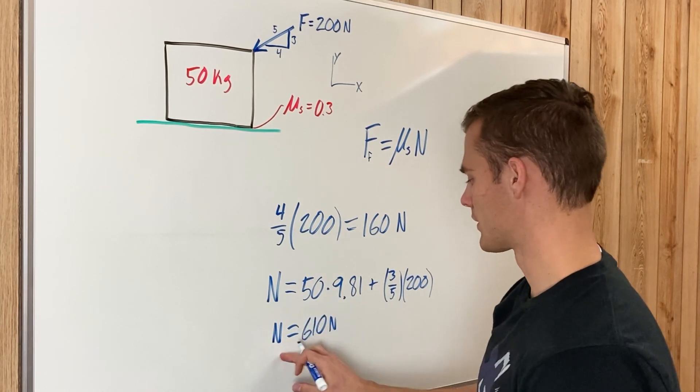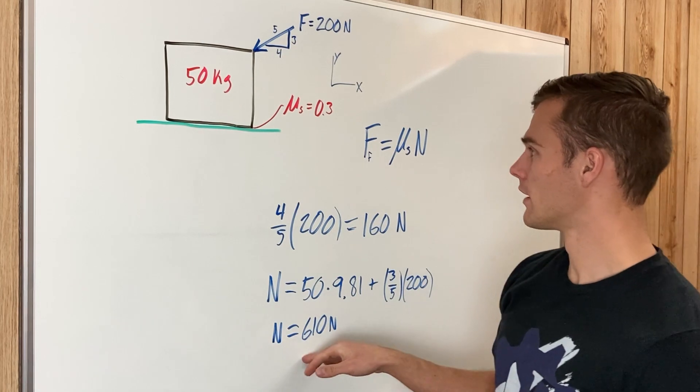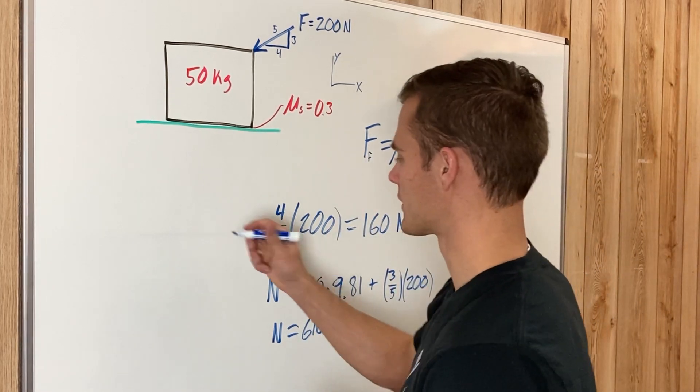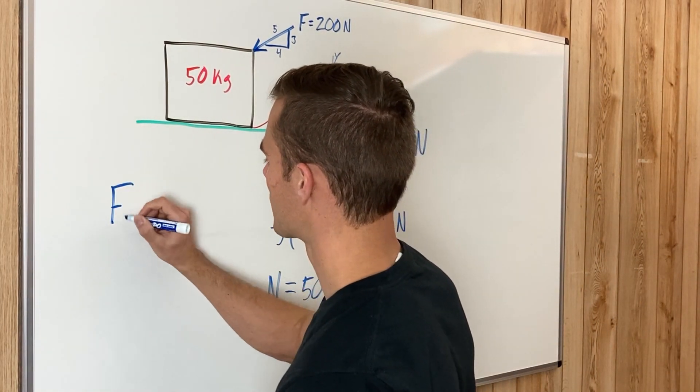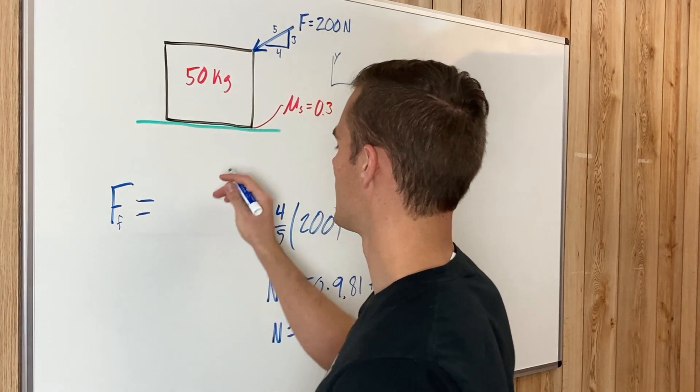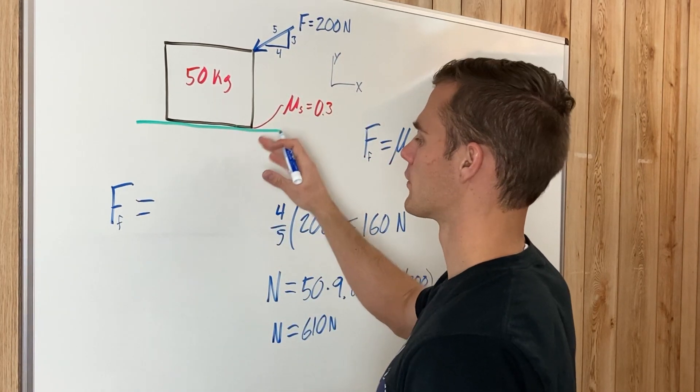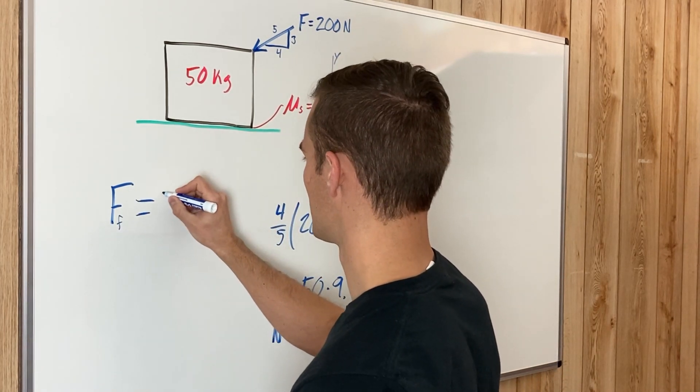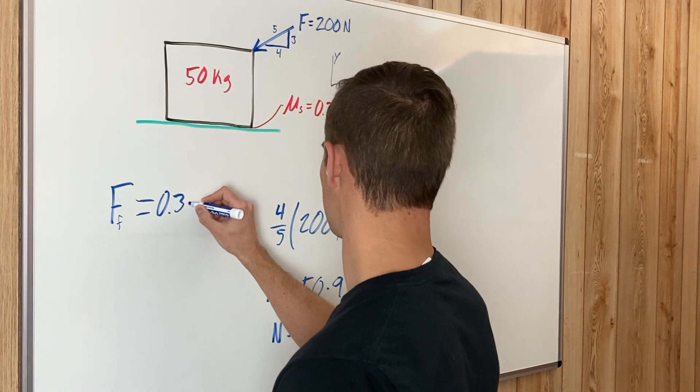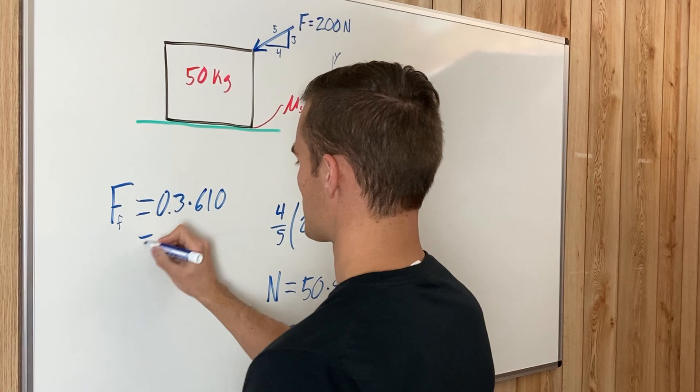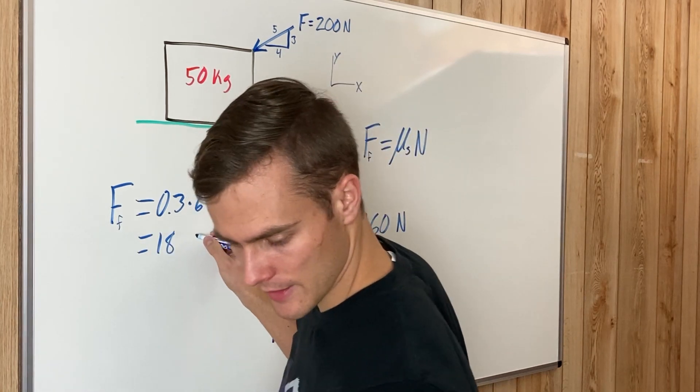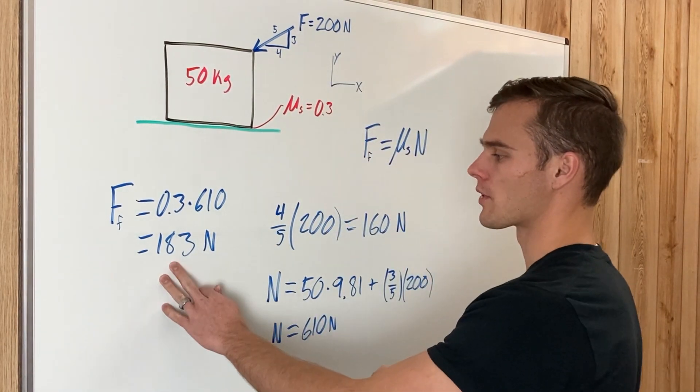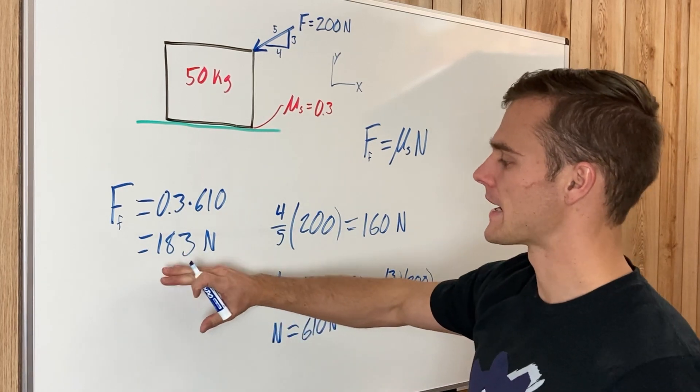610 newtons multiplied by 0.3, which is the coefficient of static friction—this maximum friction force needed to get the minimum amount of force that we need to start moving the box is just going to be slightly greater than 0.3 multiplied by 610, which comes out to be 183 newtons.